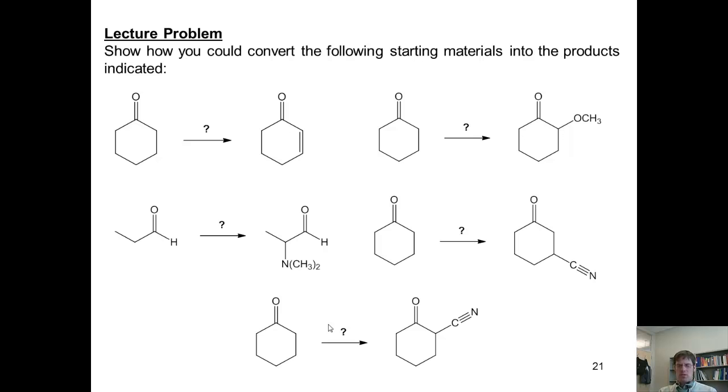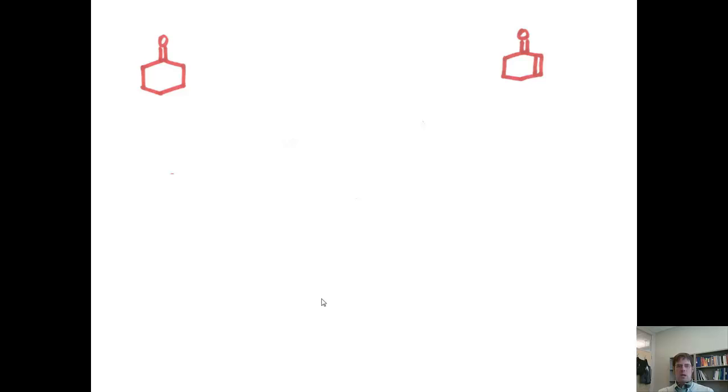I want you to figure out how to convert each of the following starting materials into the products indicated, using any number of reactions covered so far this year. As I will be giving you all of the answers to these momentarily, it might be a good time for you to pause the video and attempt them first on your own. So here's our first problem. I'm given this starting material, cyclohexanone, and I'm asked to turn it into this compound, which is called an unsaturated ketone, cyclohexenone. How in the world can I do that?